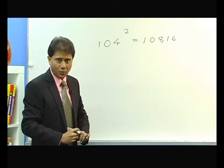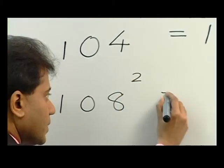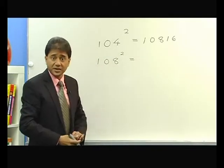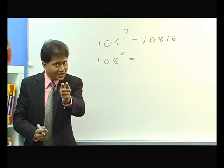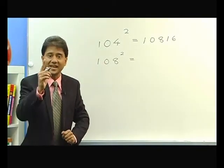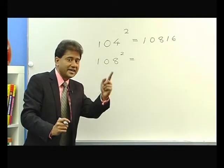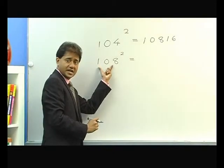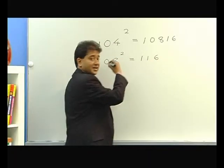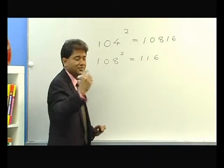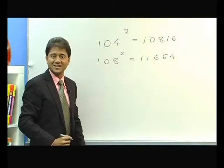Let me take another one. 108 square. As I told you, take the difference from 100. 108 minus 100, the difference is 8. This 8 you add to 108, so 108 plus 8 gives you 116. 8 square is 64. So I write 64 at the end and this is your answer.